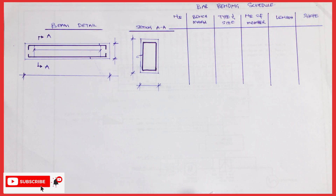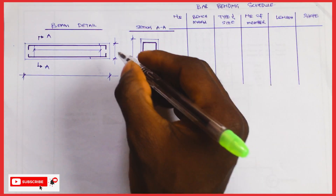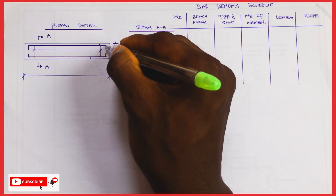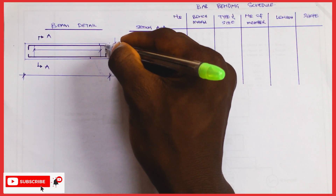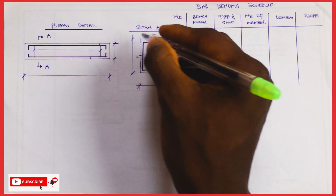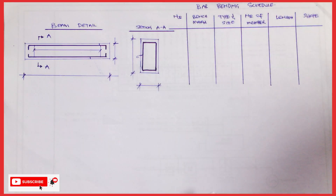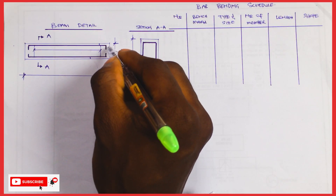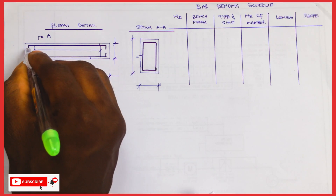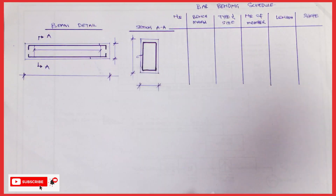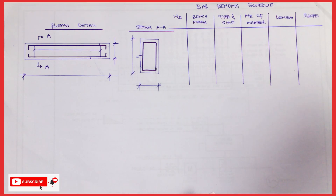Reinforcement plus concrete equals strength. The crank is just the bending of the reinforcement at the end — at the end of the cover on this side and the other side. That is the cranking. Now let's go into the reinforcement detail.